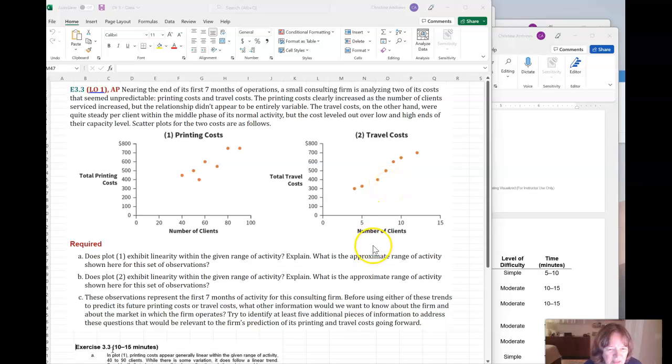And then the last thing is sort of a fluff question. This represents the first seven months of activity. Using either of these trends to predict future printing costs or travel costs, what other information would you want to know? Have they picked up more customers? Are people moving to electronic stuff? Is there room to grow in the market?